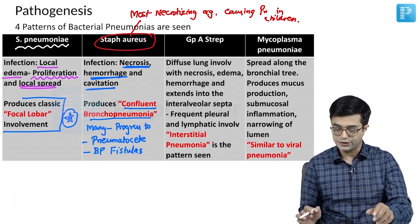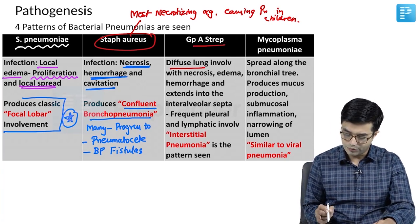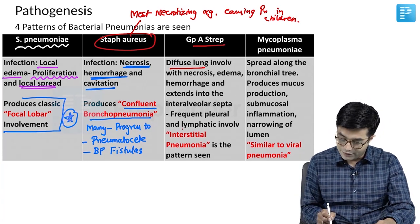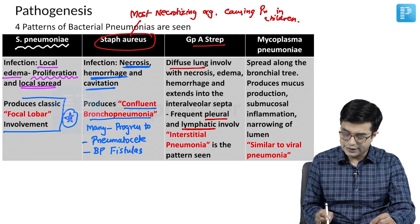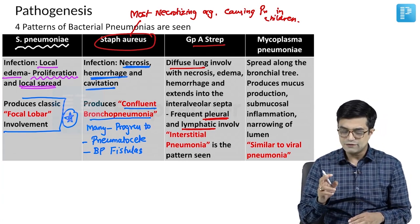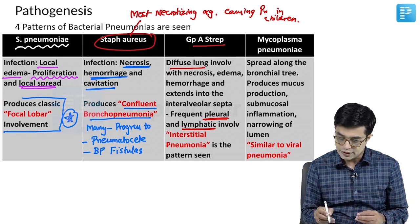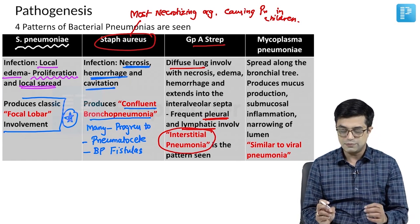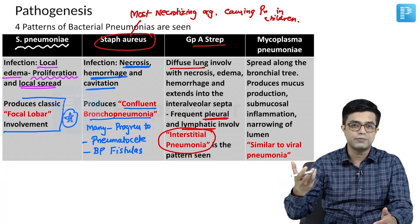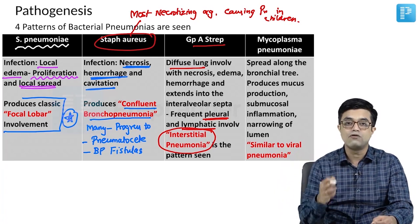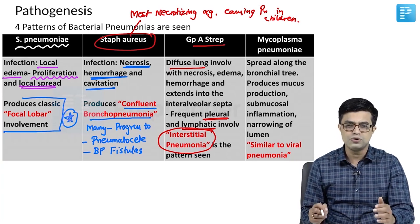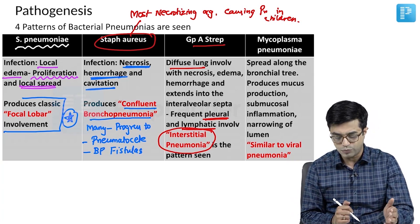Third is Group A Streptococcus, which causes diffuse lung involvement with necrosis, edema, hemorrhage, and extends into the interalveolar septa involving lymphatic vessels as well, along with pleural involvement. Because the interalveolar septa and lymphatic vessels are involved, the pattern differs from Streptococcus pneumoniae and Staph aureus — you will see an interstitial pneumonia pattern. Unlike viral pneumonias, which can also show interstitial pattern but without necrosis or rapid spread, Group A Streptococcus frequently causes parapneumonic pleural effusions.